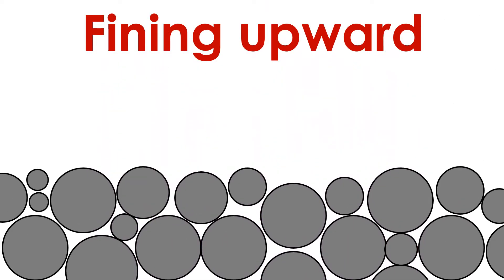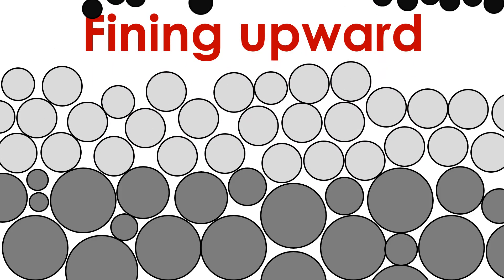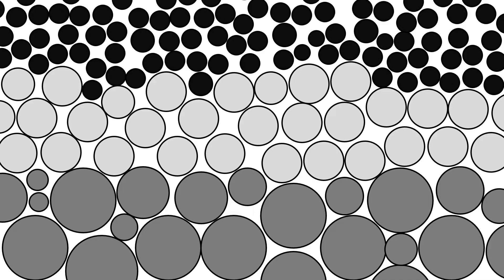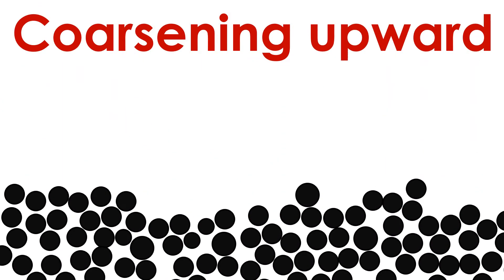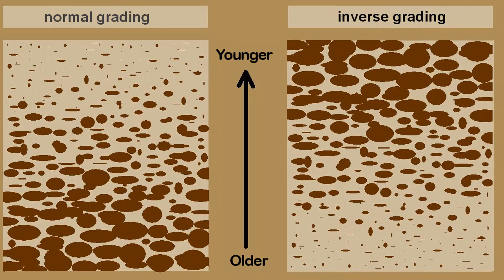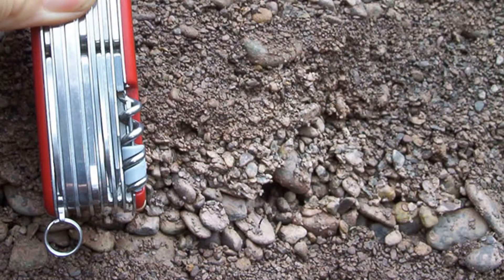Depending on how the sediment changes over time, the layers may develop grading. If the youngest beds or laminae have the smallest grains, then we say that the sequence of layers is fining upward. Conversely, if the youngest beds or laminae have the largest grains, then we say that the sequence of layers is coarsening upward. But that's just one type of grading — we can also observe several types of grading within beds. Graded bedding is a type of primary sedimentary structure where the clasts within the bed are sorted by grain size. You only find this structure in beds; laminae are too small for grading.